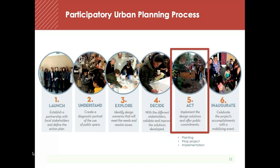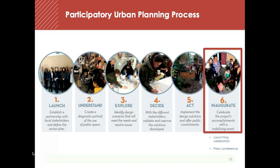Step five is an acting phase — going on site and implementing some of the solutions planned with and for citizens. Activities can range from tree plantings or building community gardens to pilot traffic calming or infrastructure demonstrations to the permanent implementation of designs. Step six, the inaugurate phase, is a celebratory phase that helps celebrate the project's accomplishments, mobilize citizens, and help people feel proud of what they've achieved. This is a human and continuous process that takes more resources than traditional consultation, but results in really strong outcomes.